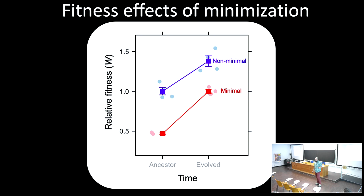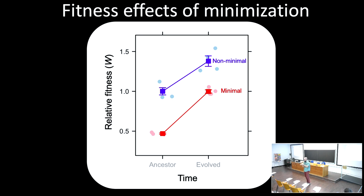Observation two: all of those fitness costs are regained in 2,000 generations—about 300 days of passaging. There's no difference quantitatively: 100% fitness regained in 2,000 generations. This is not consistent with our expectation or prediction that the minimal cell's ability to evolve would be hampered. It seems to get better very quickly. The rates of adaptation over time are linear. If anything, in this figure the minimal cell evolves a little bit faster than the non-minimal cell, statistically comparable but potentially faster.